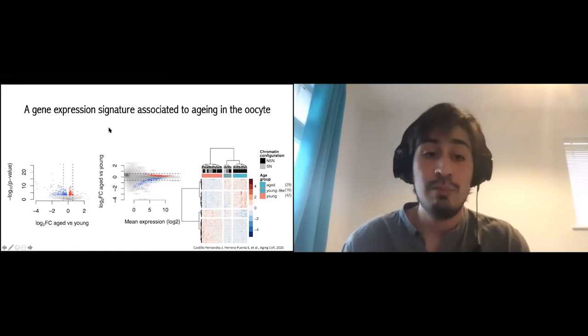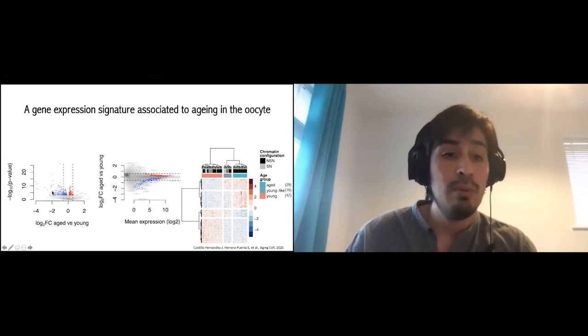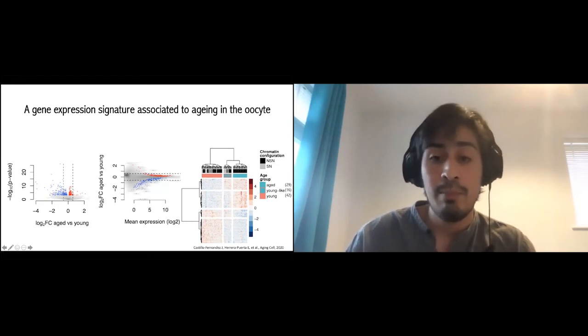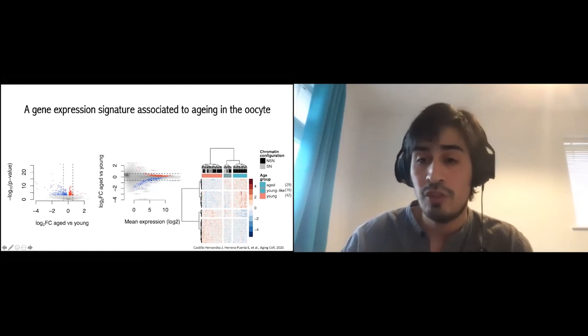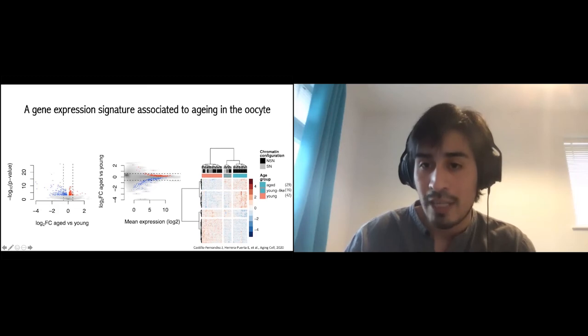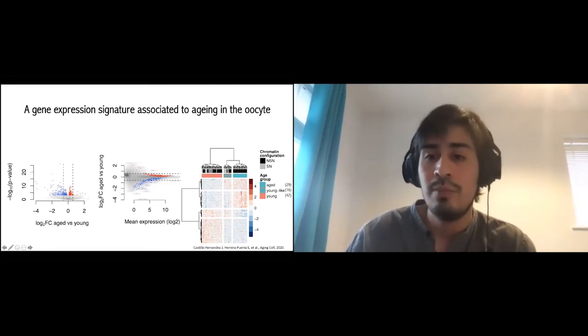Then we also tested for differential expression, but this time using the labels of aged and young that we already know. We identified more than 500 differentially expressed genes. Most of them were down-regulated in the age population. But most of them have very tiny effects, as you can see from the plot in the middle. However, when we plotted a heat map with these 560 genes, we observed that there is a third cluster coming up, which we termed the young-like oocytes. These are originally labeled as aged oocytes, but for some reason, if we look at the gene expression levels, they share some genes, some levels with the old ones, but they also share some with the young ones. They're kind of an intermediate phenotype between young and aged.